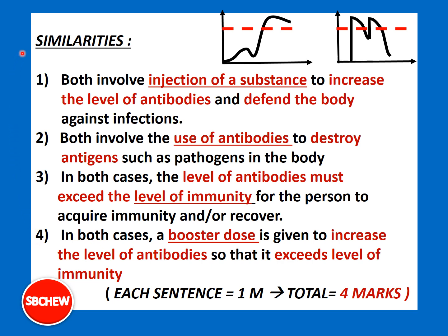Let's start by discussing the similarities. For both graphs X and Y, both involve injection of a substance — for example, vaccine for Graph X and anti-serum for Graph Y — to increase the level of antibodies and defend the body against infections. After injection of the substances there is an increase in the level of antibodies. Both a first dose and a booster dose cause an increase in the level of antibodies.